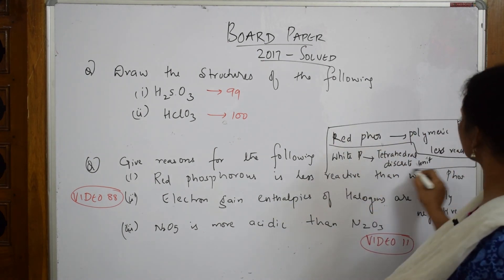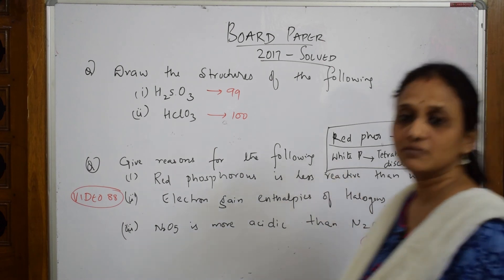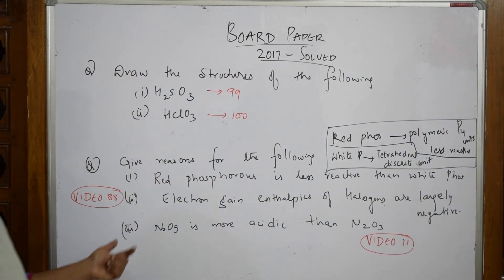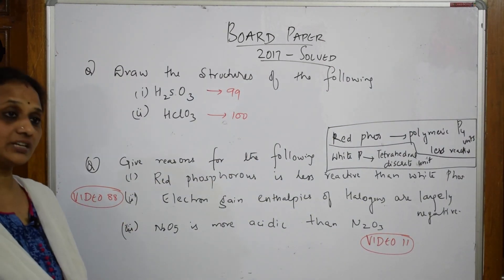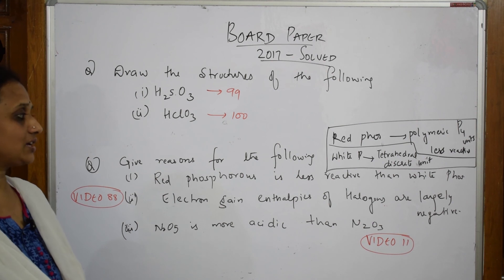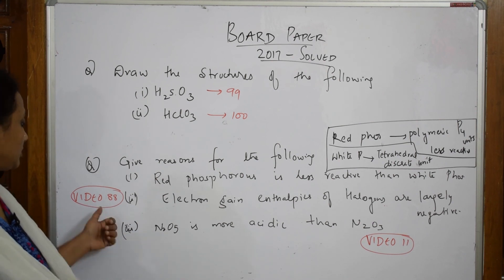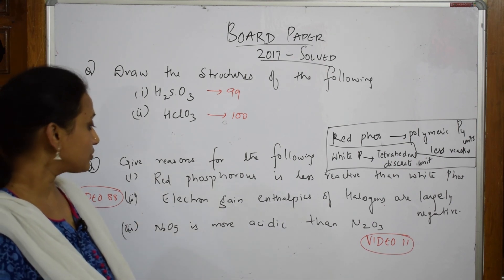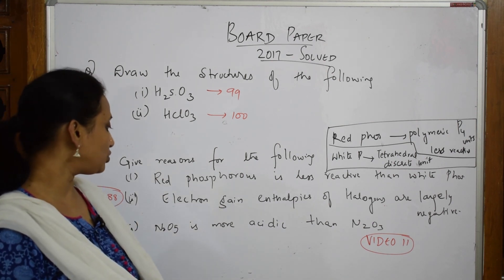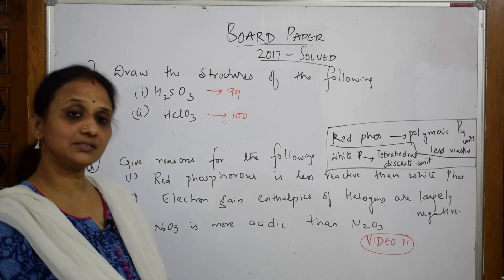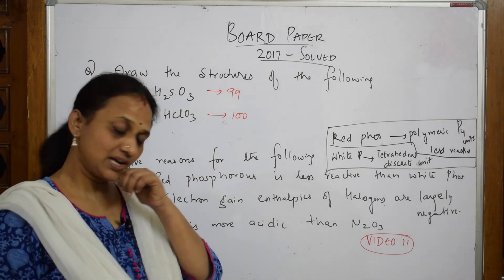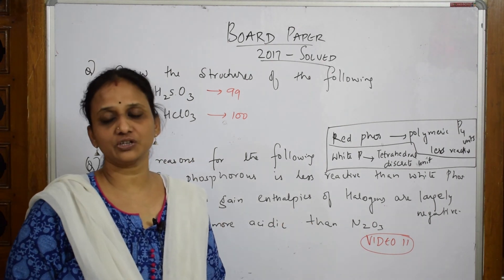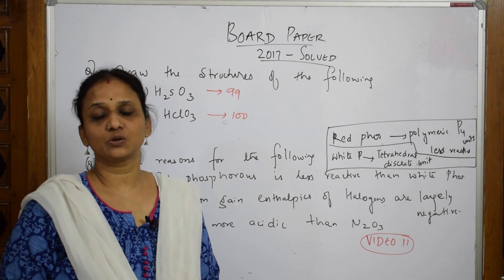Next, electron gain enthalpy of halogens — I've already covered this in video number 88. And the next question, N₂O₅ is more acidic than N₂O₃ — I did this in video number 11. Please watch those videos for the required information.